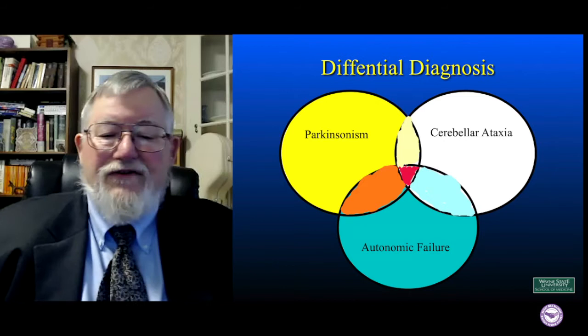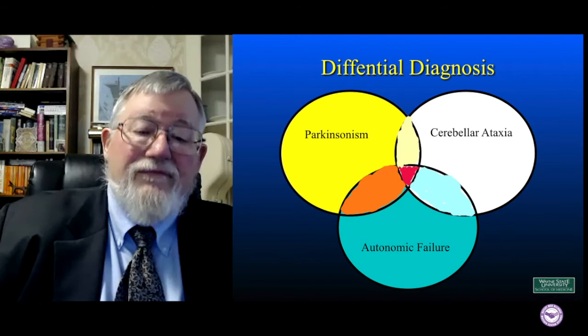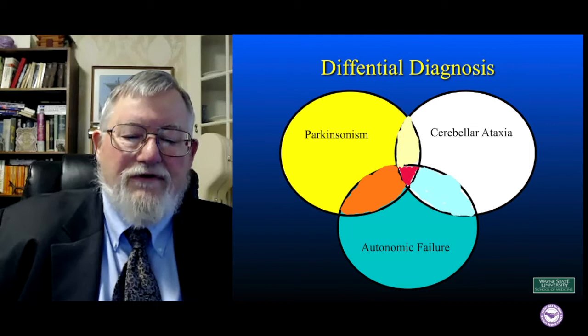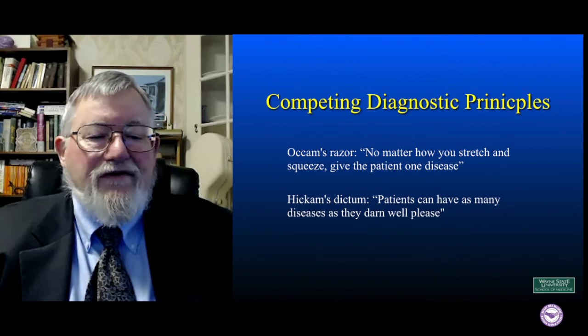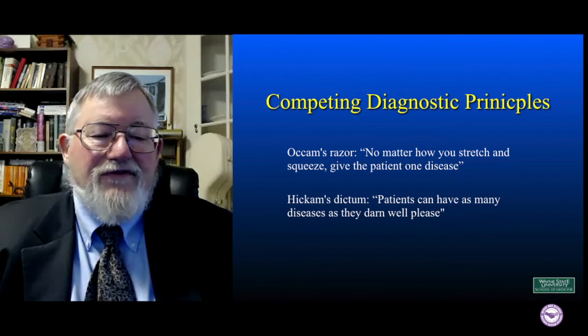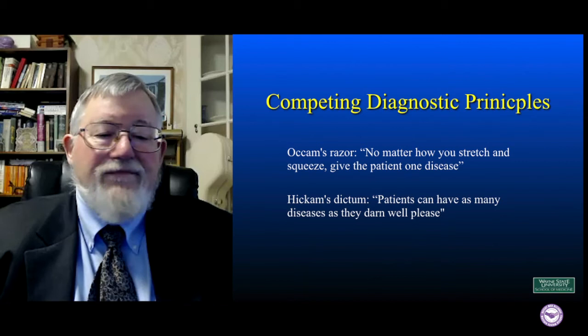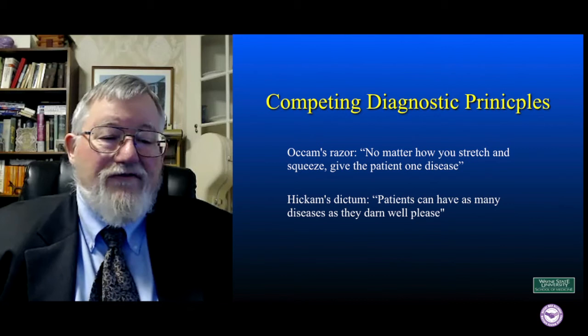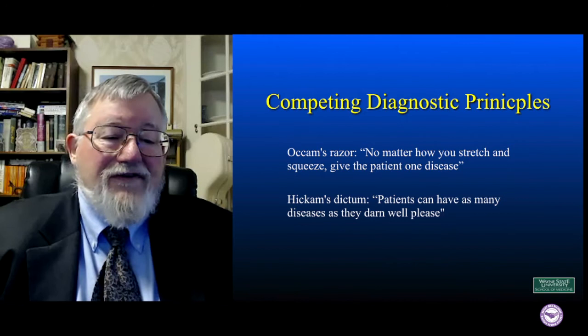It turns out that we need specific parts of particularly autonomic failure, but it also falls afoul of some other diagnostic principles. So here are two competing diagnostic principles. One is Occam's razor, which you may have run into in other contexts. In terms of logical arguments, it says that the simplest explanation is usually the best. In clinical diagnosis, we phrase this as: no matter how you stretch and squeeze, give the patient one disease.